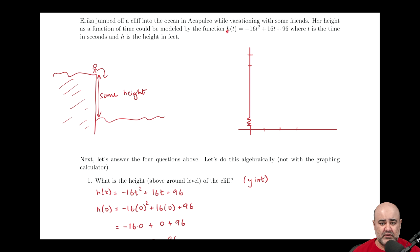h of t. So h will be the y-value, t will be the x-value. h is the output, t is the input, t is the independent variable, h is the dependent variable. And the function is given as negative 16t squared plus 16t plus 96, where t is measured in seconds and h is measured in feet.